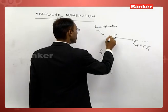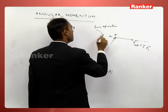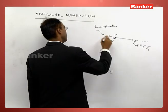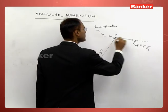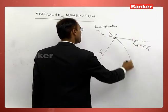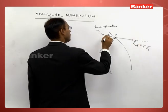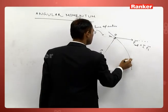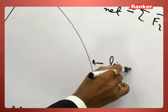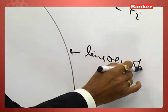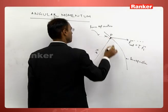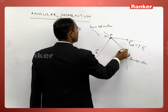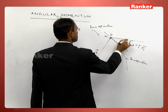The line along which the particle moves may not be collinear with the line of action. It may experience the force in one direction, however it may move in some other direction. Let us assume that this is the line of motion, because this is the velocity vector.